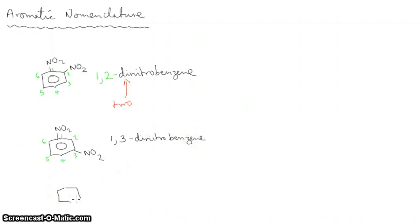And the third and last possibility would be if you put nitro groups there and there, opposite each other. That would be one, two, three, four dinitro. So there's a nitro group on carbon number one and one on carbon number four dinitro.